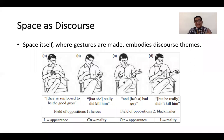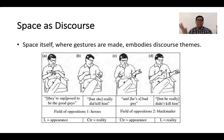Space may also be considered as discourse. The space being occupied when speaking — the proximal distance, or wherein the gestures are made — space itself, where gestures are made, embodies discourse themes.